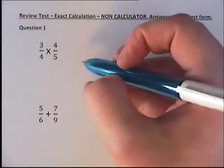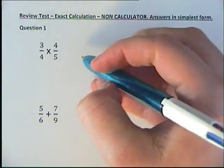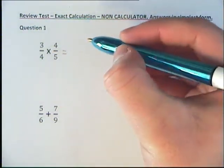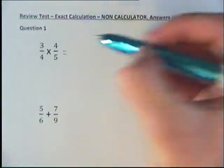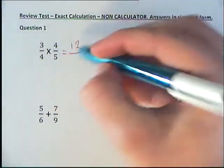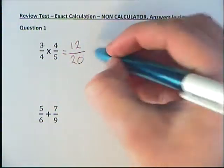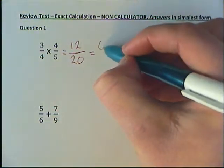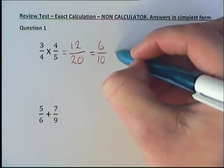The first one we're going to look at is Question 1, multiplying fractions. Hopefully we didn't have too many problems with this one. We times the top two numbers to give us 12, times the bottom two to give us 20, then simplify it down. Divide by 2 to get